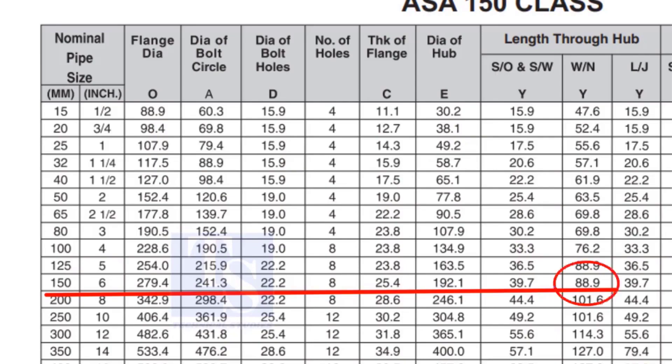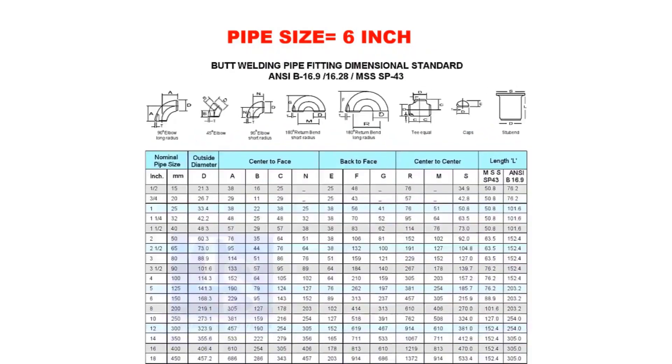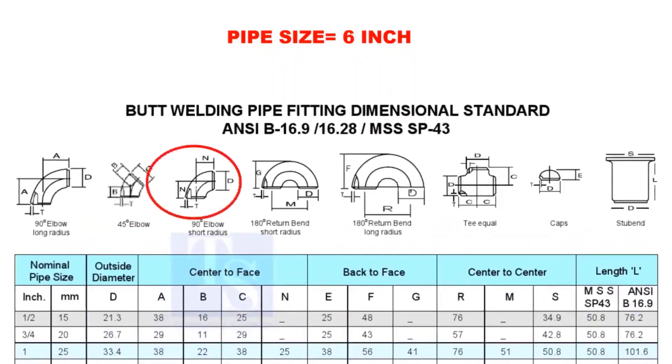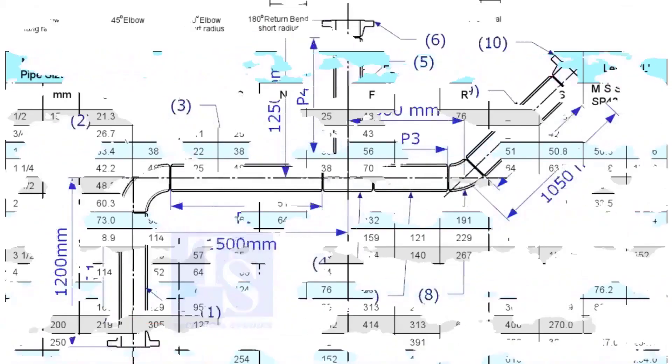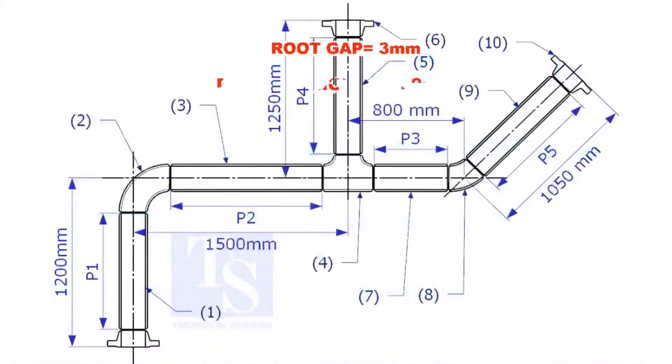Check the height of the flange in the table. Since the pressure rating is 150, the height of the flange is 88.9mm. Note down the height. Check the takeoff length of the elbow. It is 229mm. Assume the root gap is 3mm.